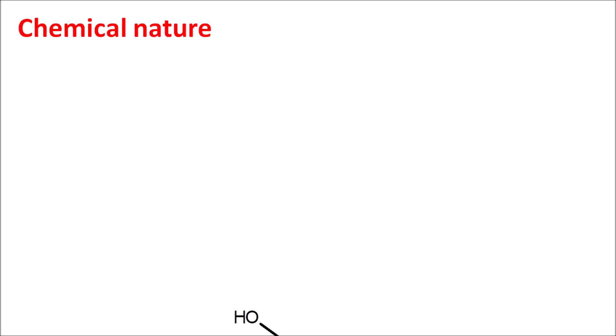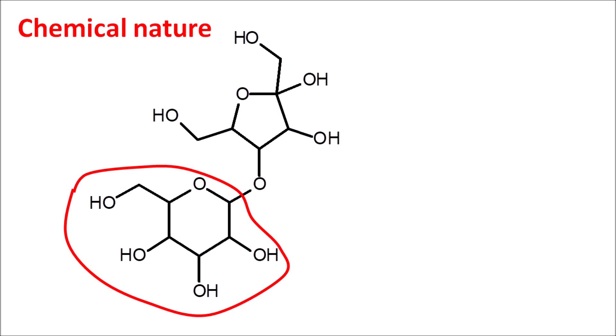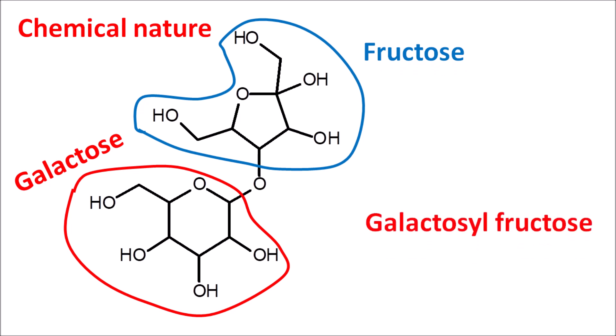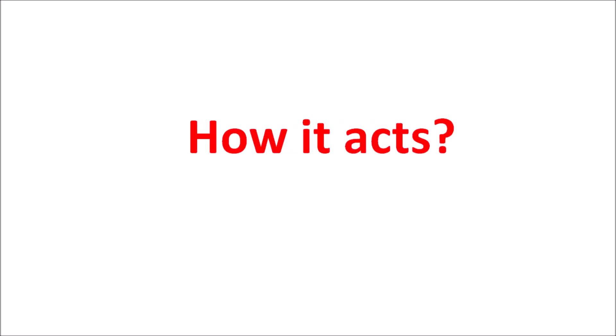First, let us look at the chemical nature of this drug. This is the structure of lactulose — it is a disaccharide. We can clearly observe the galactose ring and the fructose ring. So lactulose is a galactosyl-fructose. Now let us see how this drug acts.